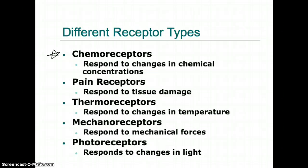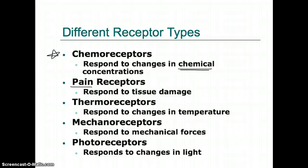Chemoreceptors respond to different chemicals. A common example is receptors in your nose — when somebody walks past, you can smell the chemicals and aromas from their cologne or perfume. Those chemoreceptors in the nasal cavity transfer signals up to the olfactory bulbs, then to the posterior region of the brain where you interpret smell. Pain receptors respond to tearing or damage within the fascia or tissue. Thermoreceptors, like a thermometer, detect changes in heat or cold, typically found near capillaries. Mechanoreceptors deal with movement and mechanical forces, mostly in tendons and ligaments. Photoreceptors are found in the eyes — those are the rods and cones.